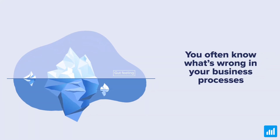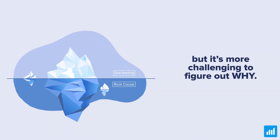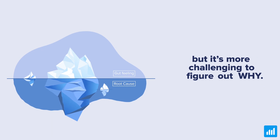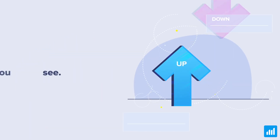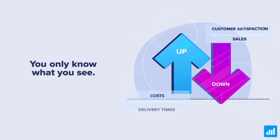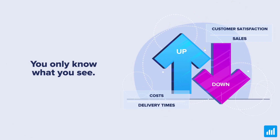You often know what's wrong in your business processes, but it's more challenging to figure out why. You can only identify symptoms of the problems — that your costs and delivery times have gone up, while your sales and customer satisfaction have gone down.